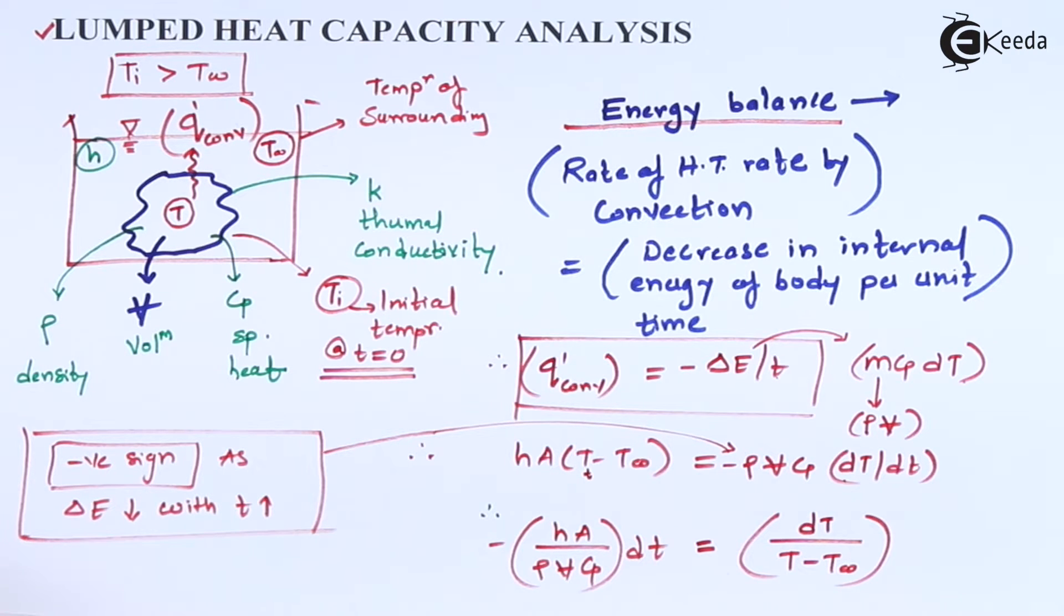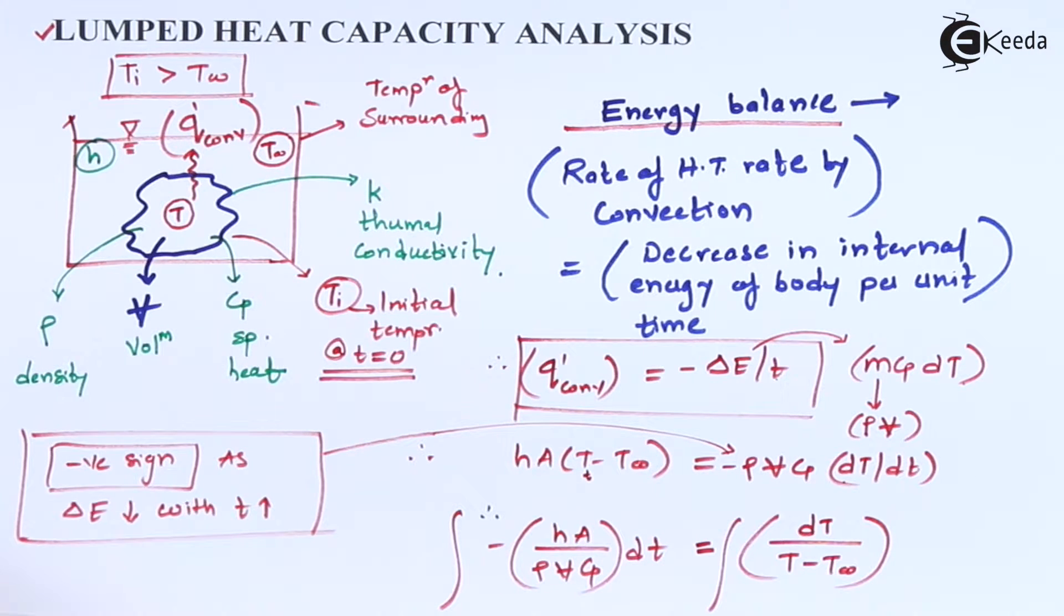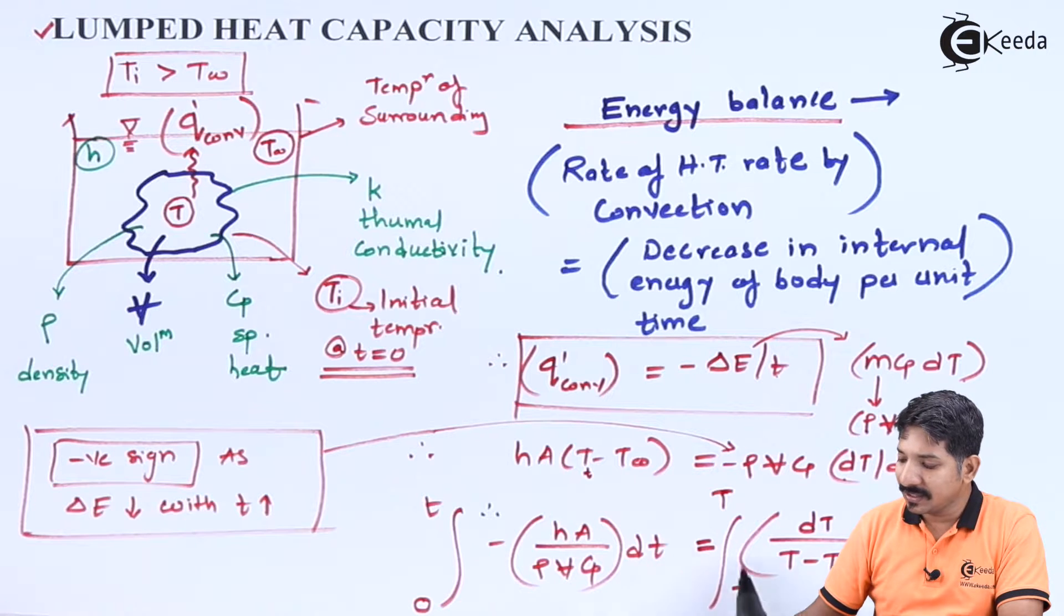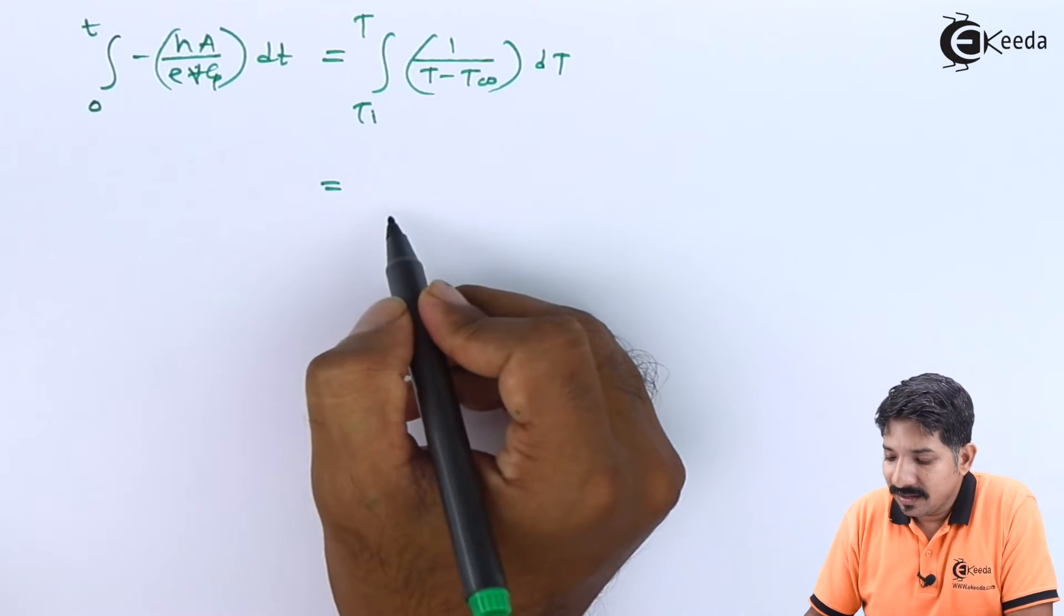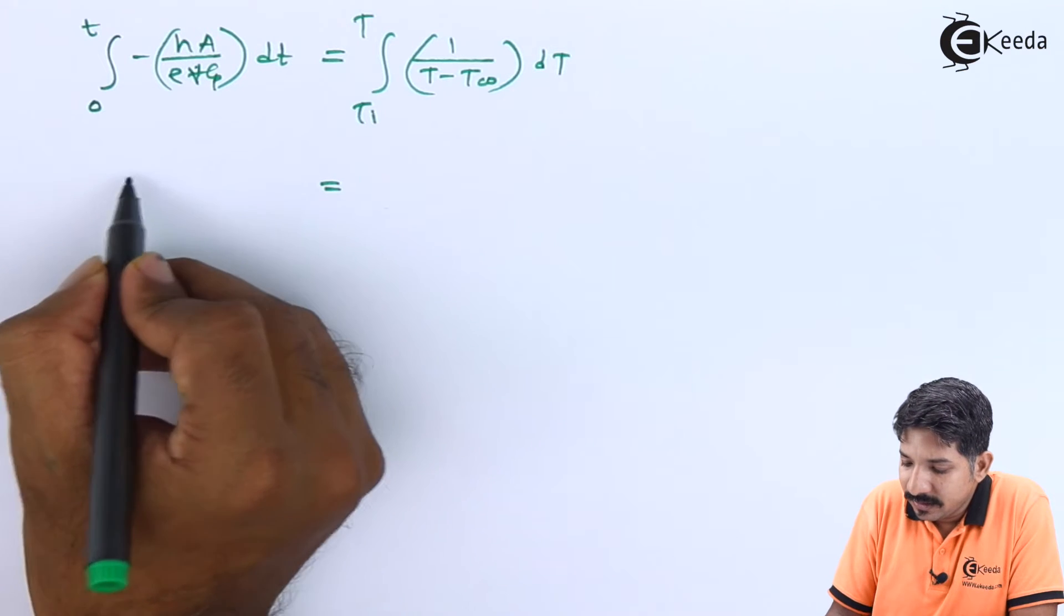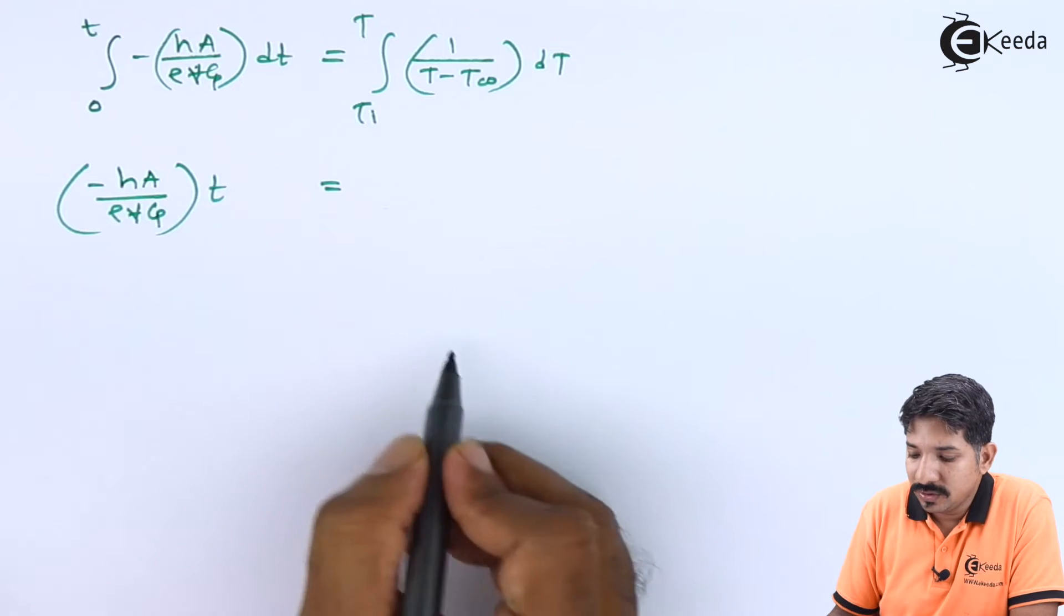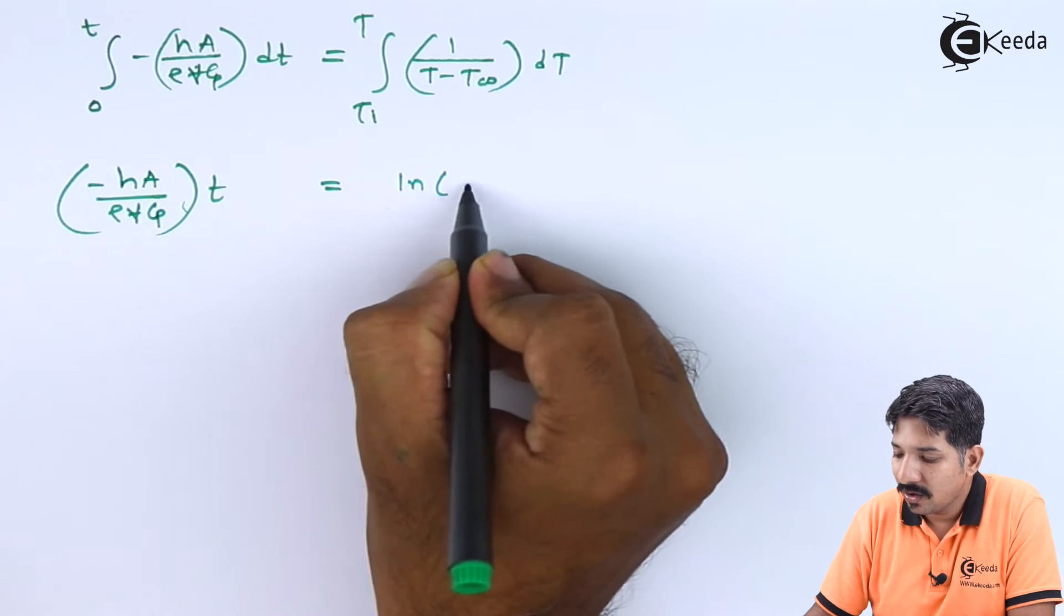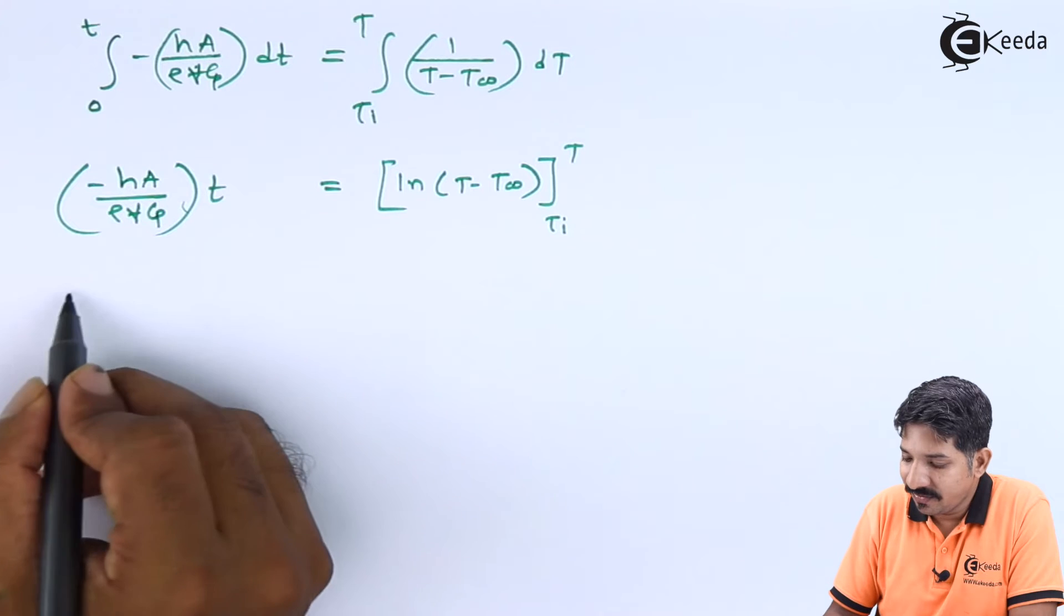Now this we are going to integrate with the limits. Now if I want to integrate this, what will be the limits of integration? Obviously, time will be from 0 to some time t and here my temperature will be, the limit will be from Ti that is the initial temperature to some temperature T at time small t. Now if I solve this integral, it will be, obviously here I will be left with minus HA rho V CP into t. Now this is t minus 0, I can simplify this as t itself, and here 1 upon t, the integral of 1 upon t is ln of t minus t infinity. Now the limits will be from Ti to t, so this will be ln of T minus T infinity upon Ti minus T infinity equals minus HA upon rho V CP into t.